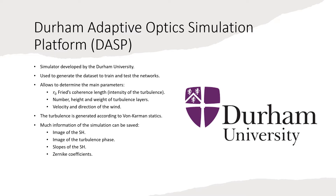With this simulator, the user can determine all the parameters of the turbulence and the adaptive optic system, such as the Fried parameter r0, the number, height, and weight of the turbulence layers, or the velocity and directions of the turbulence. To generate the turbulence, the von Kármán model is used.